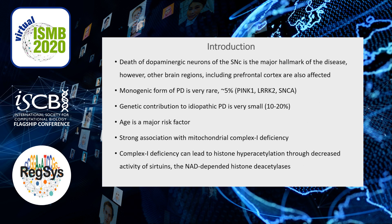The most known pathological hallmark of the disease is the death of dopaminergic neurons in substantia nigra, but other regions, including prefrontal cortex, are also affected. The vast majority of cases are idiopathic, and the genetic contribution to these is estimated to be only around 10–20%.